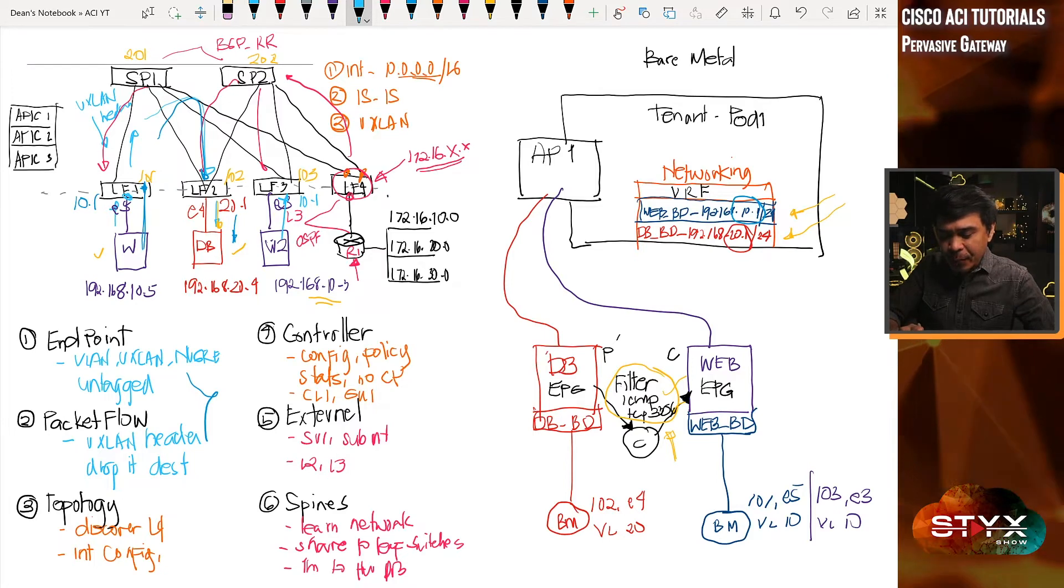The leaf3 will process it, it will replace it with VXLAN header, will remove the original header, and then it will drop it to the destination leaf. In this case, if it's leaf2.